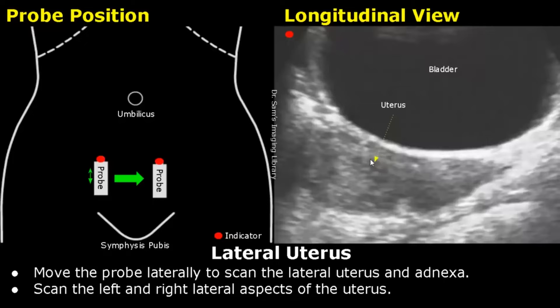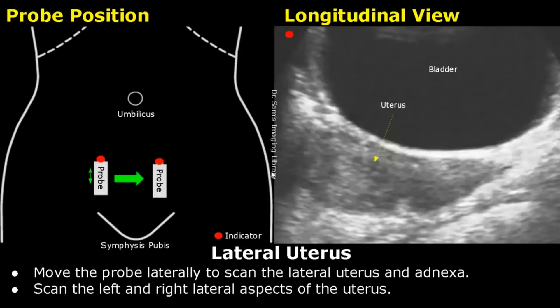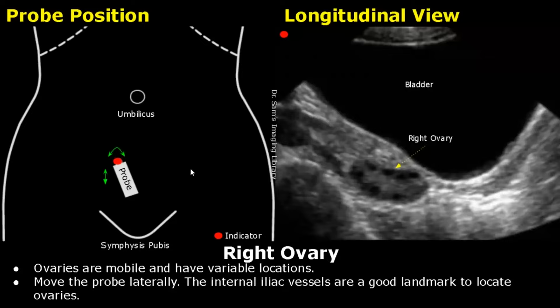To scan the lateral aspects of the uterus, move the probe laterally towards both the left and right sides. This is the lateral aspect of the uterus. We will now see how to scan the ovaries. The ovaries don't have a fixed position, but locating the internal iliac vessels is a good landmark to locate the ovaries.